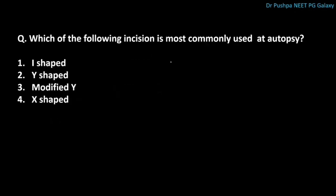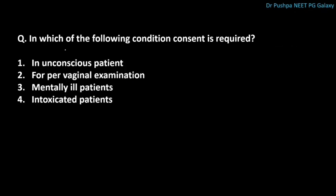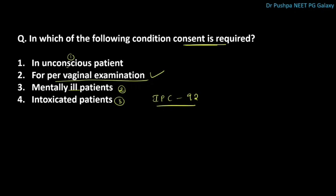Which incision is most commonly used at autopsy? The correct answer is the I-shaped (eye-shaped) incision, from symphysis menti to symphysis pubis. The Y-shaped incision is used in neck injury. In which condition is consent required? The correct answer is pervaginal examination. In emergency conditions — unconscious, mentally ill, intoxicated patients, and children — under IPC section 92, consent is not required.